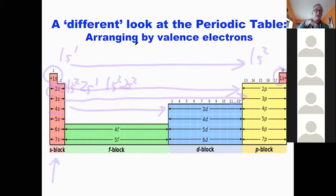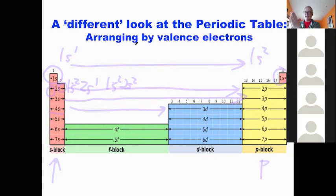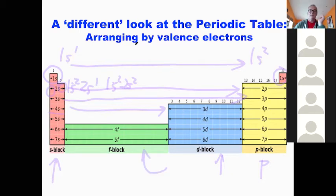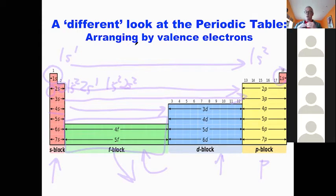That's why we call groups 1 and 2 the S block, and groups 13–18 the P block — they're defined by electrons going into P. The transition metals are the D block. The rare earth metals, usually shown below the periodic table, form the F block. If you just look at the periodic table, that tells you the order we fill in electrons.